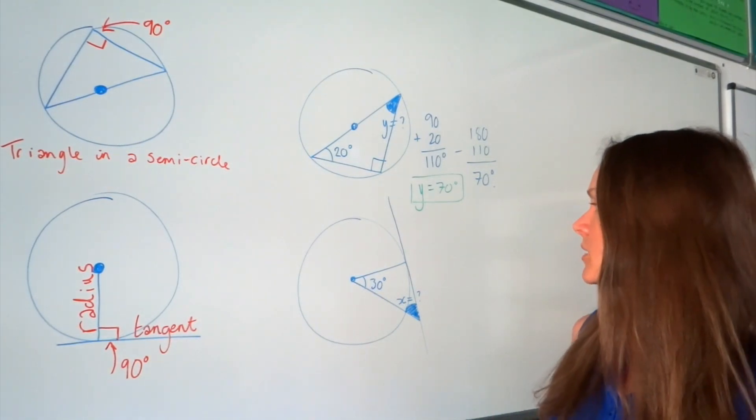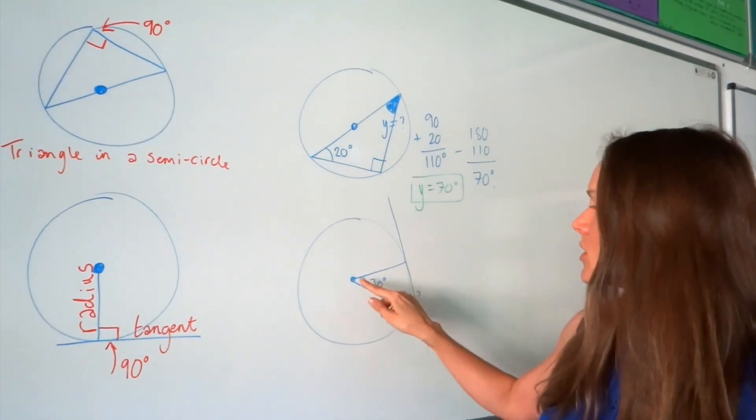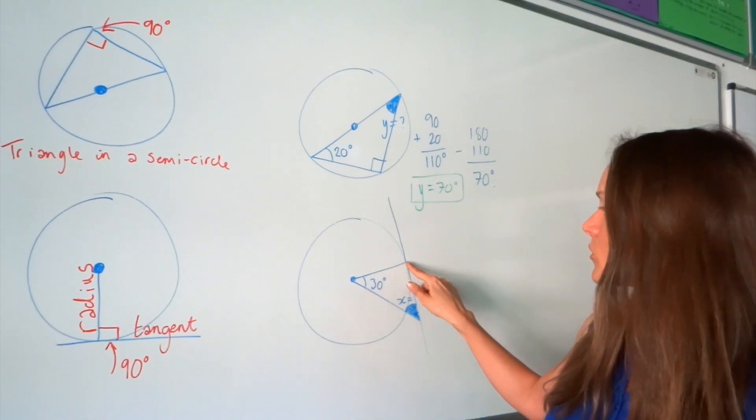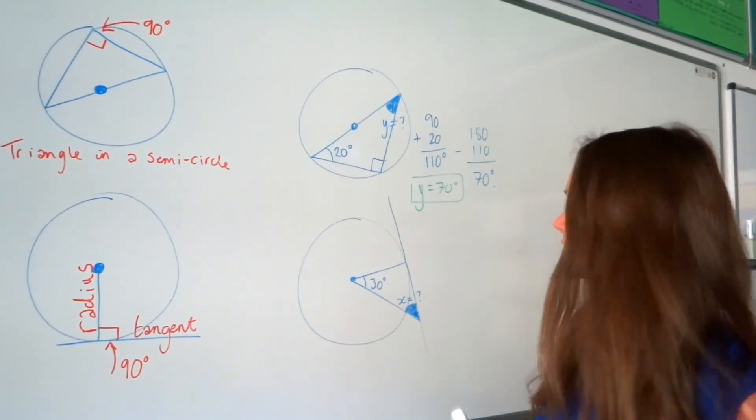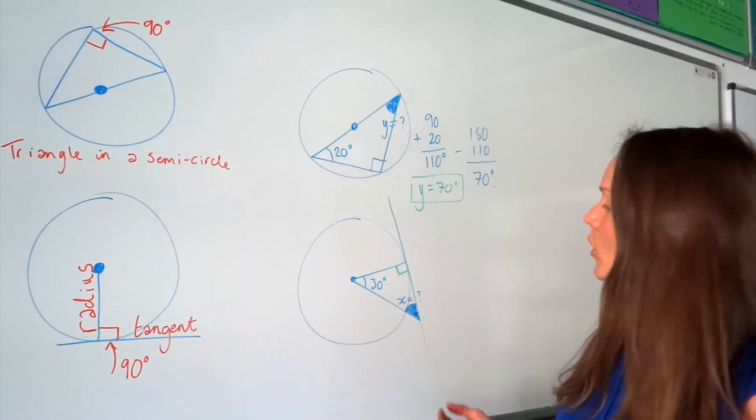So in the second question, I can see there's a tangent in this one. And here is the radius, from the centre of the circle to the circumference. Which means we have another angle there, this one, which is 90 degrees.